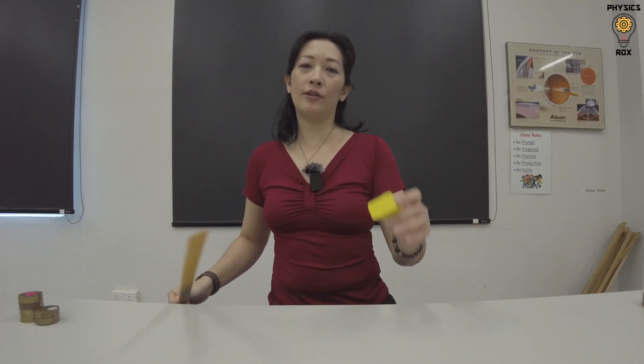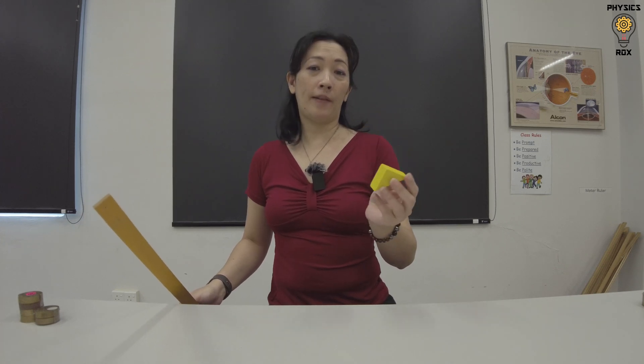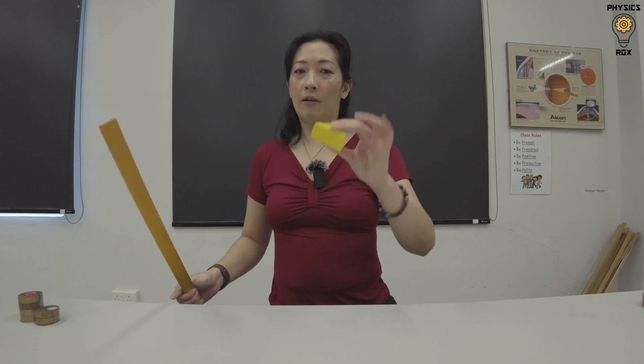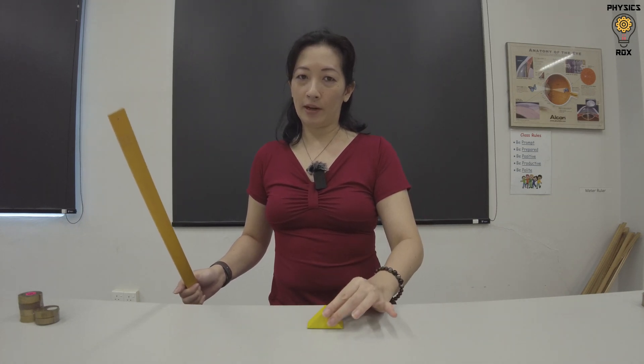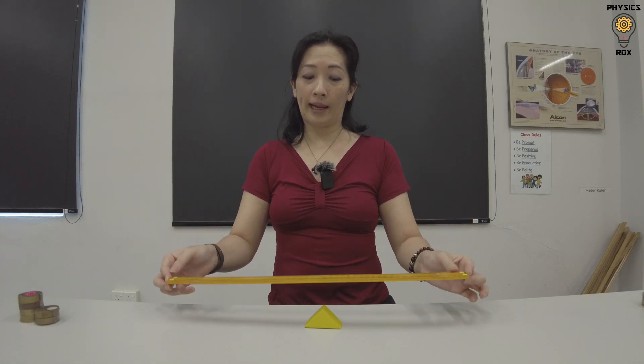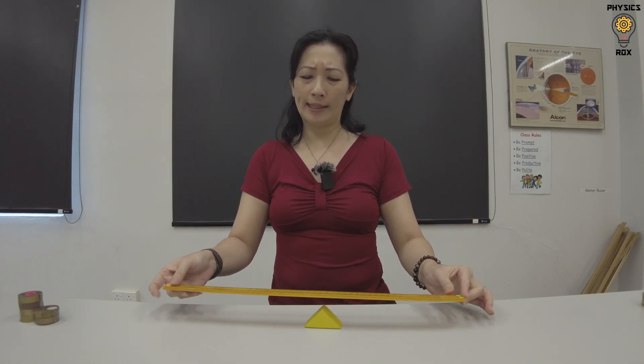And of course, you're going to need something that acts as a fulcrum or a pivot. In this case, we're using a triangular wooden block. Now, how we use this pivot is, of course, place it on a table, and this half meter rule is going to act as the plane where we're going to try to balance things on.